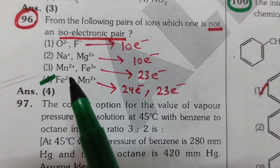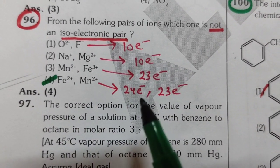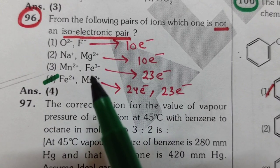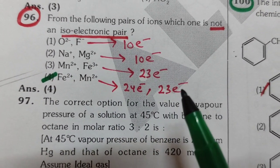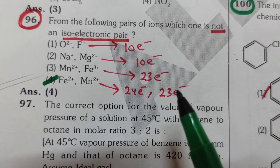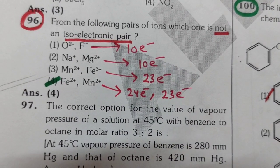But fourth one: Fe2 plus is 26 minus 2 equals 24 electrons. Mn2 plus is 25 minus 2 equals 23 electrons. That's why the fourth one is not an isoelectronic pair. Clear.